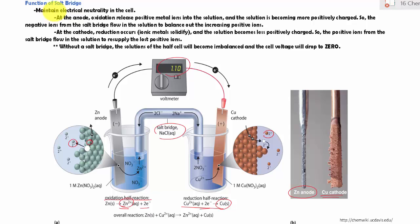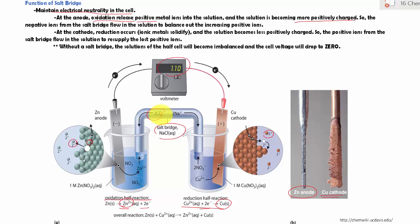The function of a salt bridge is to maintain electroneutrality in the cells. So how does that work? We have the anode half cells and the cathode half cells. On the anode cells, oxidation releases positive ions into the solution, so the solution becomes more positively charged. To balance out the increasing positive metal ions, the negative ions of the salt bridge — in this case chloride ions from sodium chloride — will flow into the solution. So the positive and the negative charge in the solution cancel each other out.